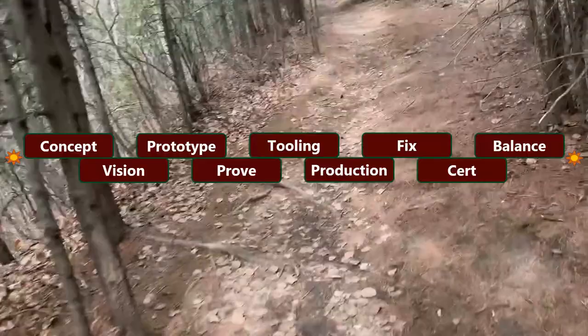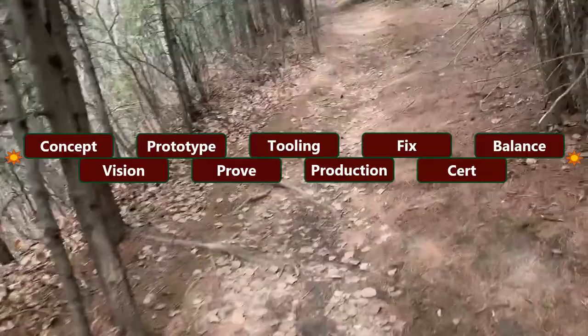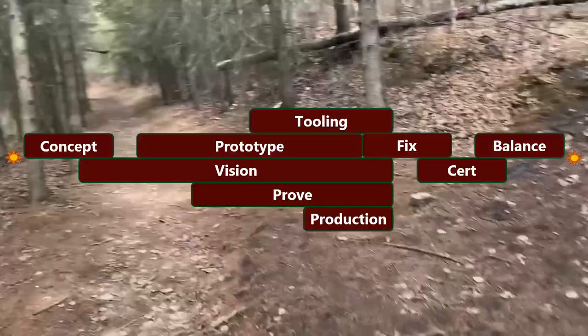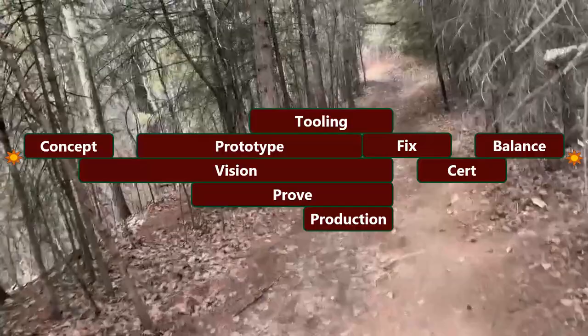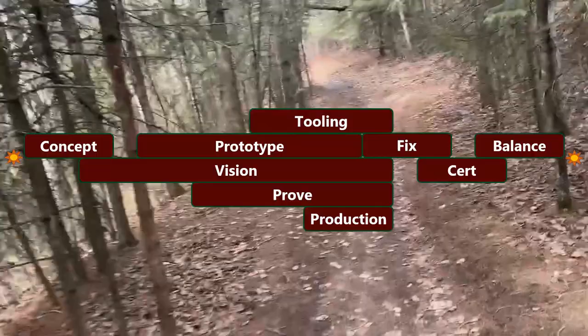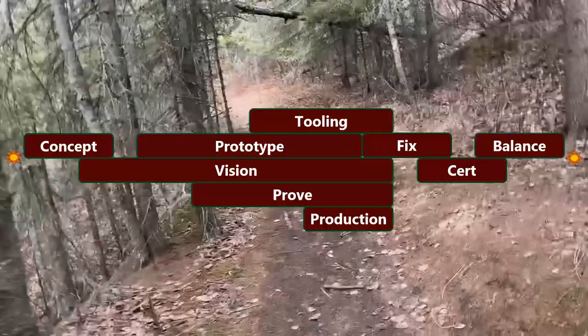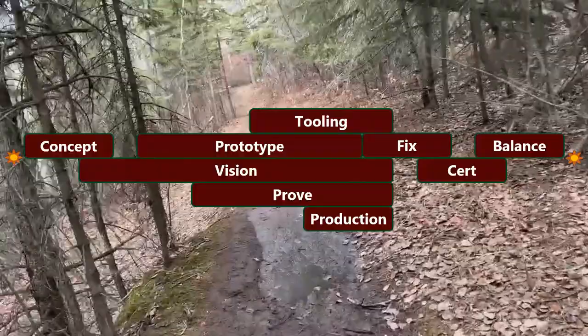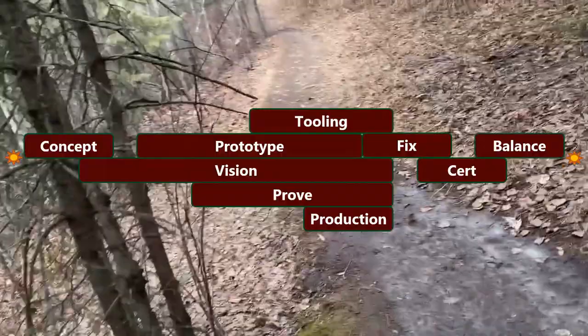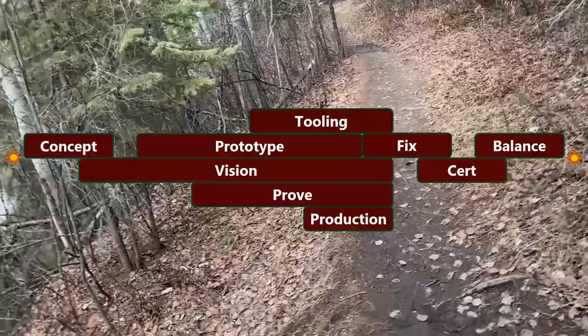Another way this can go wrong is projects can have difficulty getting out of earlier phases. You end up in a project that should be in production and is doing production work, but meanwhile there's still prototyping going on, the vision is changing, and there's still tooling to be done. This divides work, causes rework, and results in a game where far more effort goes into just forcing the project through the phases than is required — because instead of doing one to one-and-a-half things at a time, you're doing four or five different phases all on top of each other, causing a lack of direction and wasting effort.